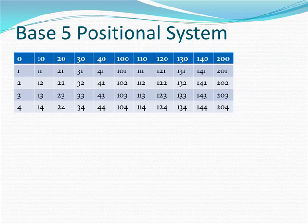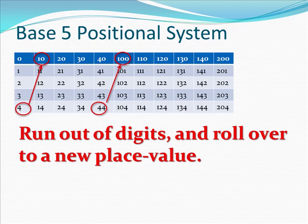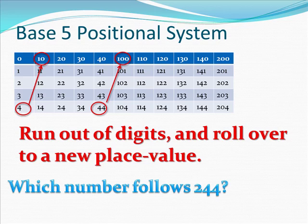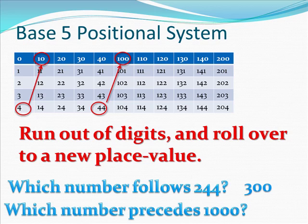Instead of having the base 10 system we're used to, we would have this system. It still has a pattern to it, but it repeats more frequently. So we run out of digits and roll over to a new place value more often. Looking at this pattern, we know that after 44 comes 100. What do you think would come after 244? If you guessed 300, you're correct. And actually, I really shouldn't say 244. I should say which number follows 244, because that number 2 doesn't represent 200 in this number system. Which number precedes 1, 0, 0, 0? Notice that 44 rolled over to 100. So which three-digit number is the largest three-digit number before we roll over to four digits? In base 5, that's going to be 4, 4, 4.